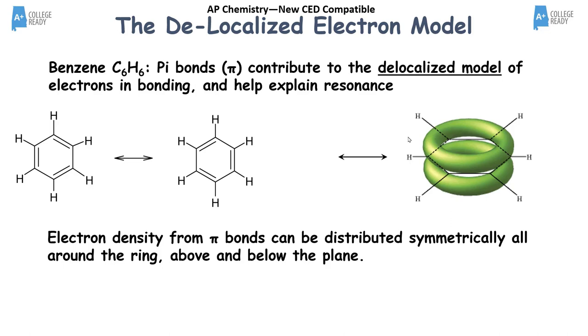We can describe this with bond order — essentially an average of how many bonds exist. In benzene, the carbon-carbon bonds aren't alternating single and double bonds; each one is more like a bond-and-a-half. So all the bond lengths are the same, somewhere between a single and a double bond length.